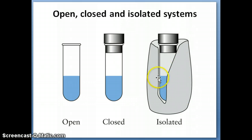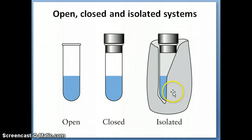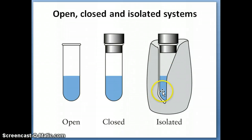An isolated system is basically a system where you can't exchange either matter or energy — both cannot be exchanged. It's like that same closed test tube, but now covered with some kind of thermal insulation. A thermos would be a good approximation of what an isolated system is. If you put something inside a thermos and close it off, it will keep at that temperature for a good period of time. Of course, nothing is completely isolated — even a thermos, if you let it sit for a long period of time, will eventually cool down, suggesting some leak of energy to the outside. But for an approximation, that's what an isolated system would be.